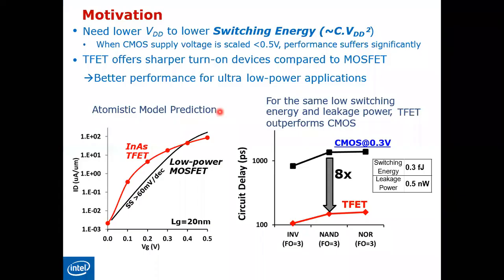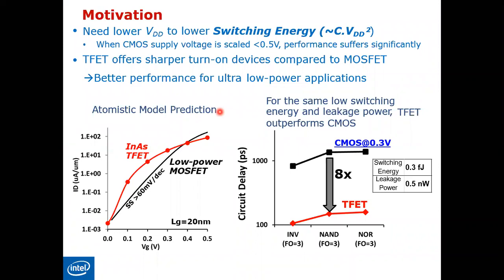The first question that comes to mind is: why should we change the MOSFET? We already have a running MOSFET — all technology is constructed with it. If you return back to our first slide in this course, you will remember what's called Moore's Law, where it's expected that every 18 months the number of transistors in a certain area is doubled, meaning you get more and more smaller transistors and can functionalize at higher speeds.